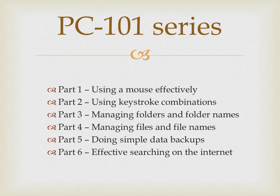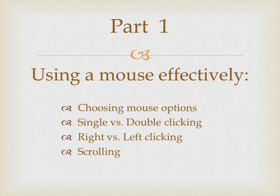Here's where I'm going with this PC101 series. In six brief how-to videos, I will address some of the common questions that people have. Starting with how to use a mouse effectively, I'll cover topics on using keyboard keystrokes, managing folders, managing files, backing up data, and searching the internet. So let's get started. In part one, we'll focus on four aspects of the computer mouse: configuring options, single and double clicking, left and right clicking, and using a scroll wheel.